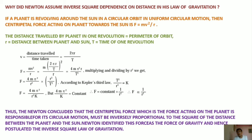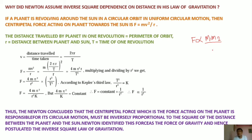Now we can see why Newton assumed an inverse square dependence on distance in his law of gravitation. As we studied in the last lecture, the universal law of gravitation states that in the entire universe, every object attracts every other object with a definite force. That force is directly proportional to the product of the masses of those two objects.